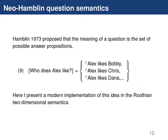Now let's look at how this framework deals with WH questions. Hamblin proposed that the meaning of a question is the set of possible answer propositions. For example, 'who does Alex like' can be thought of as the set of propositions: Alex likes Bobby, Alex likes Chris, Alex likes Dana, etc. I'll present a modern implementation of this idea in the Rooth-ian two-dimensional semantics. A WH phrase has a denotation where there's a set of possible values — roughly short answers — as the alternative set, but no defined ordinary semantic value.